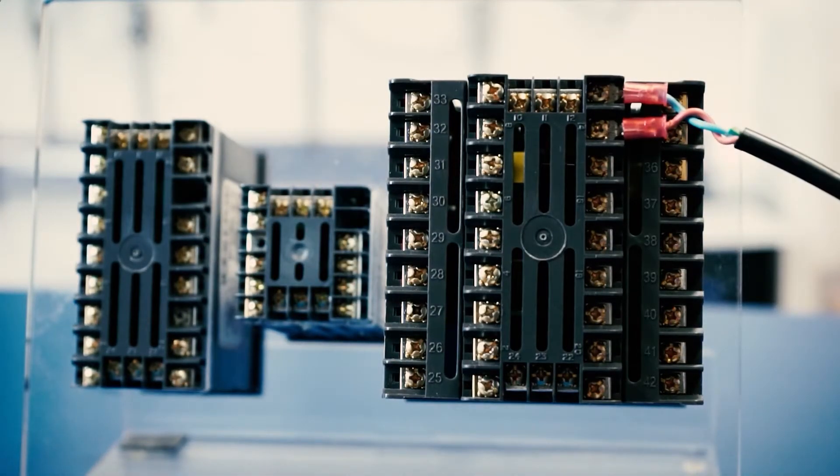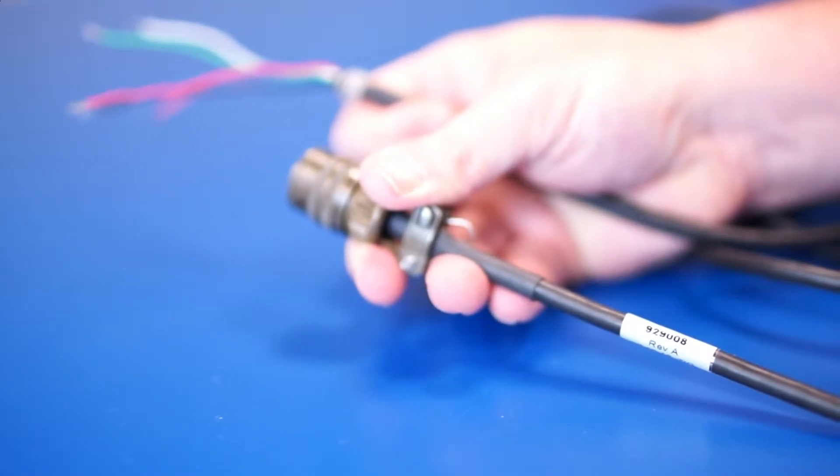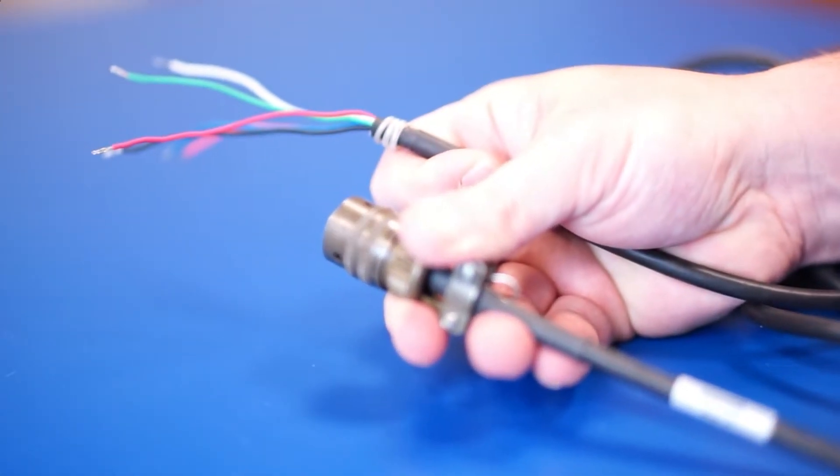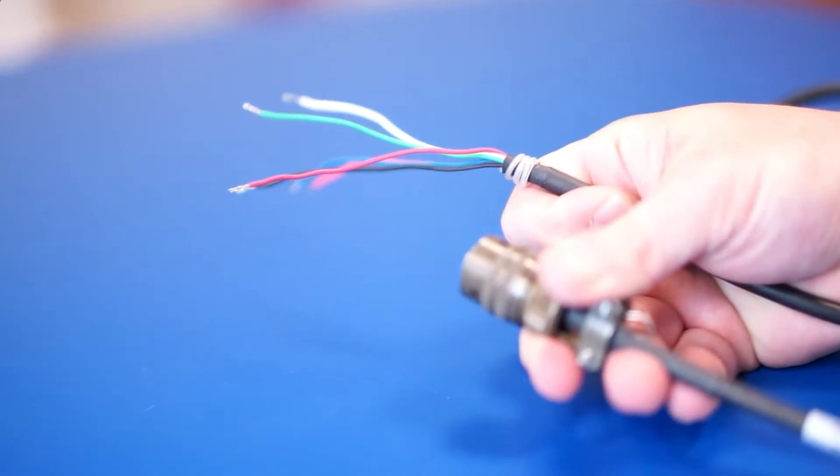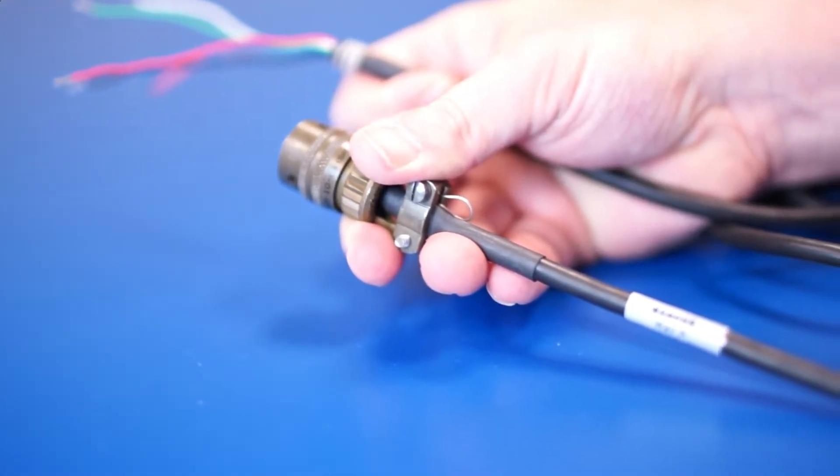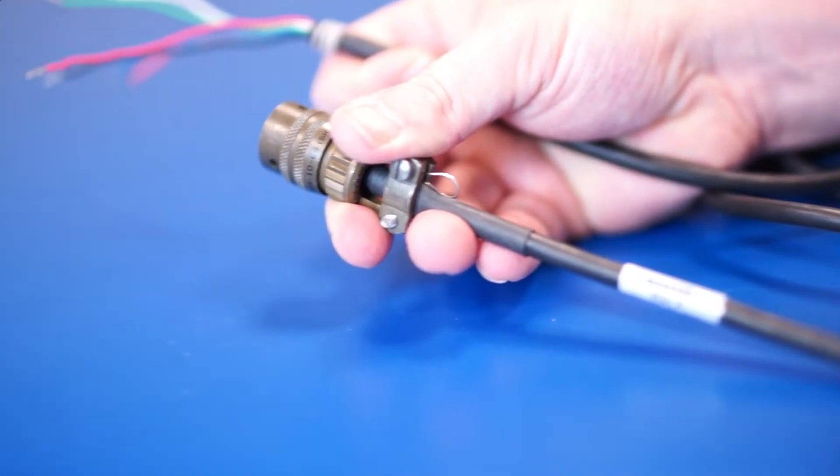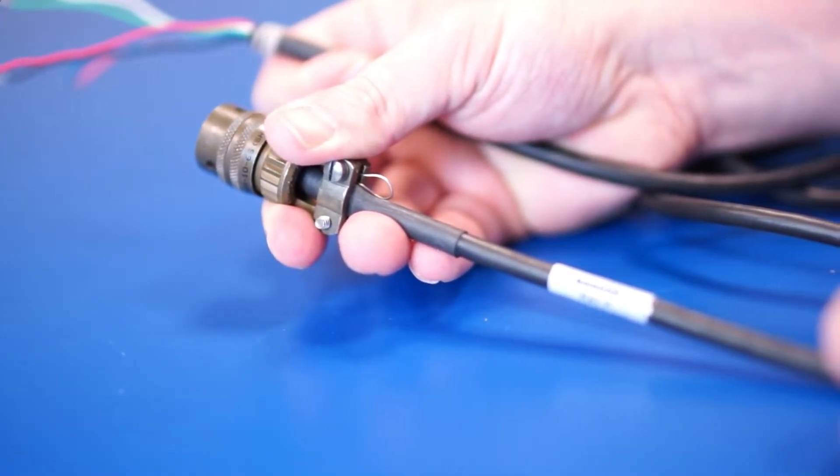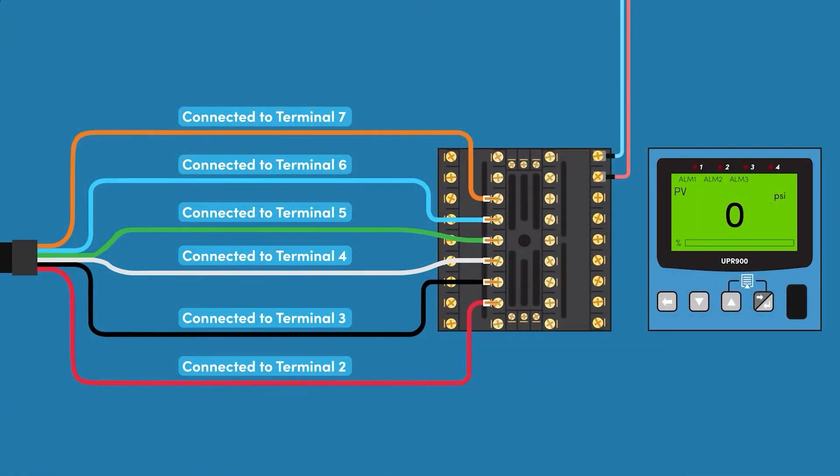With the cable assembly in hand, the bare wires are terminated to the instrument based on the signal output of the pressure sensor. In this example, our pressure sensor has a 0 to 33.3 millivolt output and will utilize all 6 wires. The correct wiring termination is as follows.